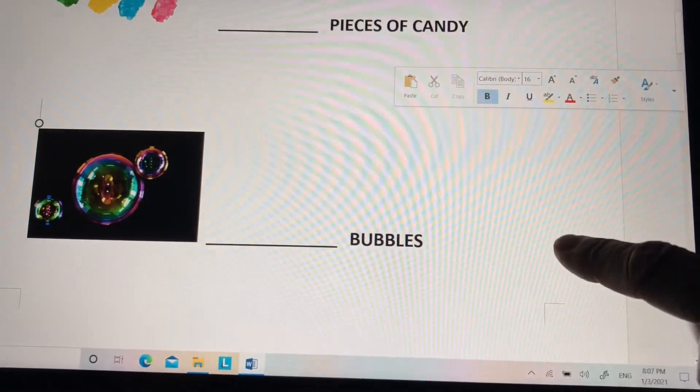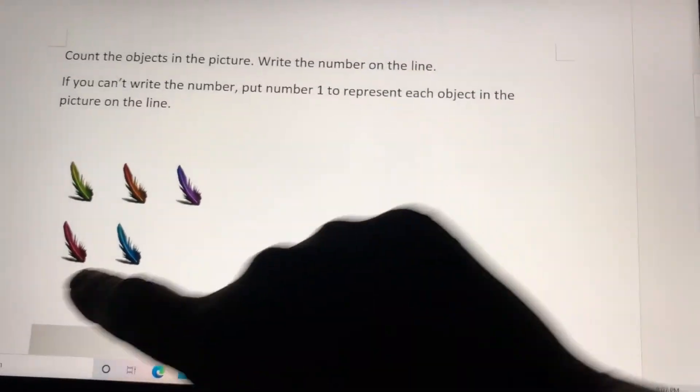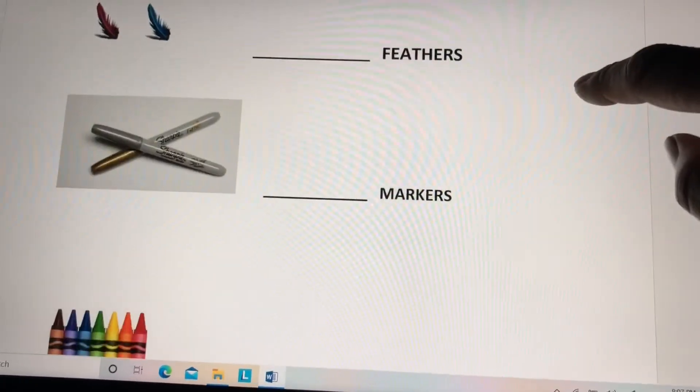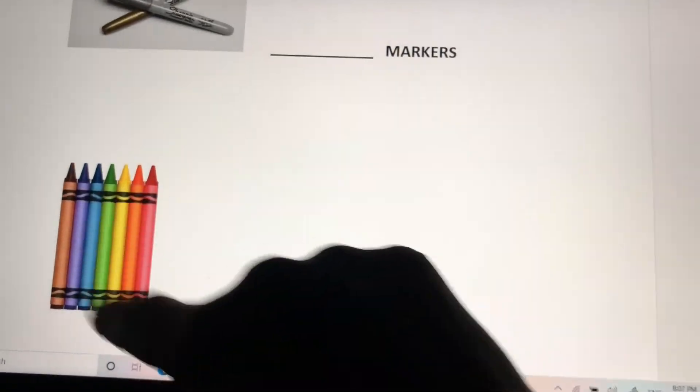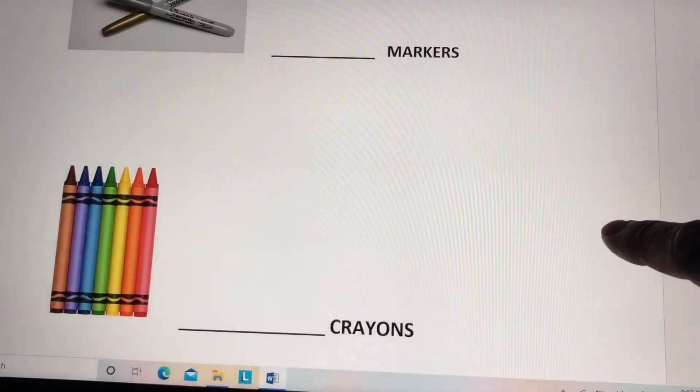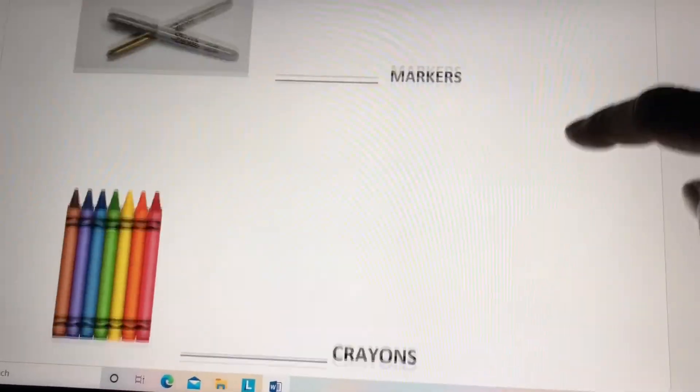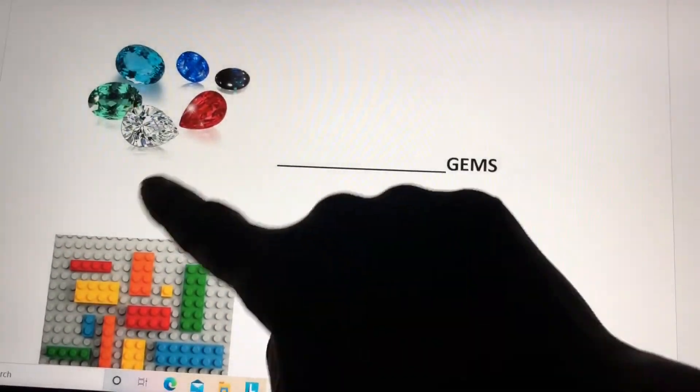There are pieces of candy you need to count and put the number there. Bubbles, put the number there. Feathers, put the number of feathers there. Markers, put the number of markers. Crayons, put the number of crayons there. Strawberries, how many strawberries do you see?